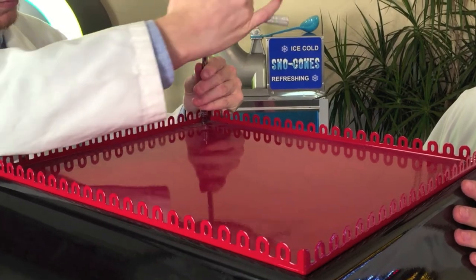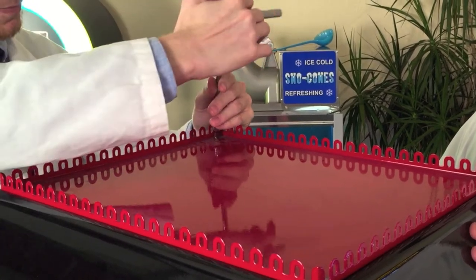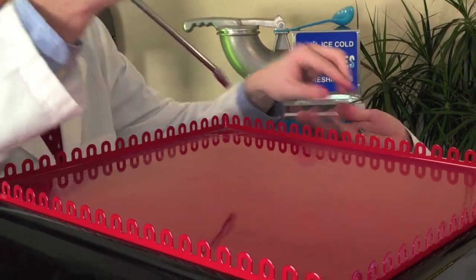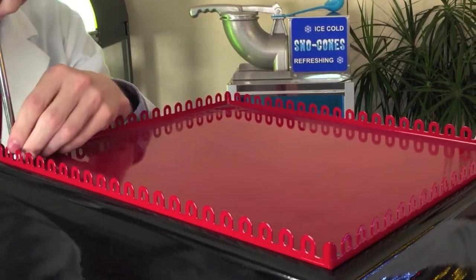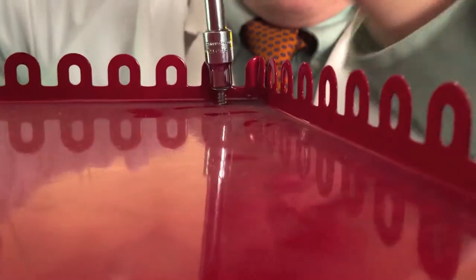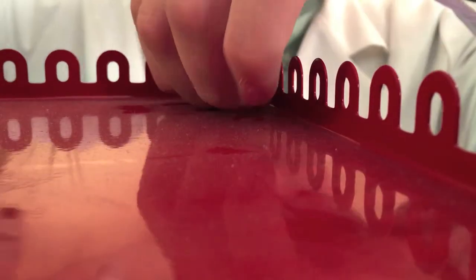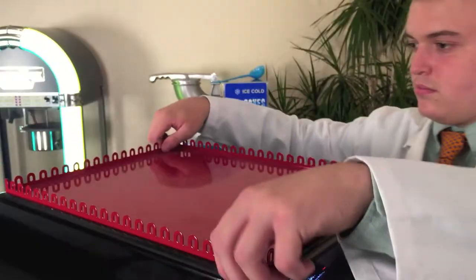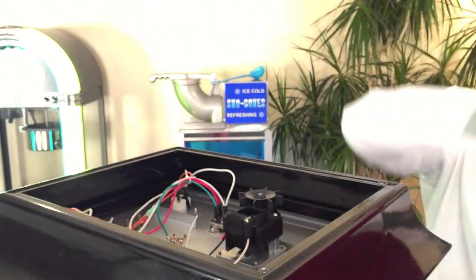Begin by taking off the four hex screws on the top of the machine. You can use a ratchet or a hex driver. Once all four screws have been removed, gently remove the top.